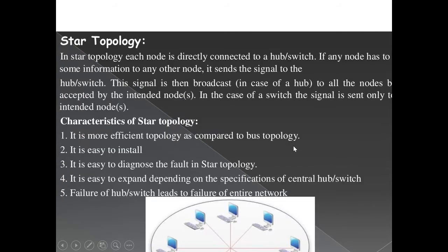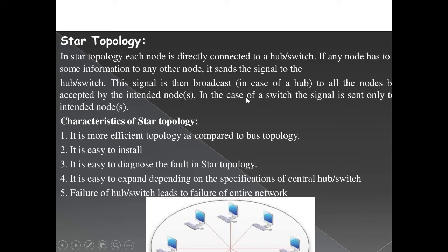In star topology, suppose in your school the modem is kept in the principal's chamber, and internet connection is given from there to the office, computer lab, physics lab, chemistry lab, bio lab, and library - that is star topology. Each node is directly connected to a hub or switch. When a node sends information, the signal goes to the hub or switch. In case of a hub, it broadcasts to all nodes, but a switch sends only to the intended node.